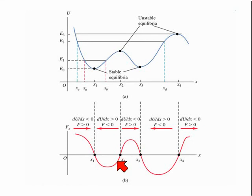To the right of x2, the gradient of the potential energy function is negative, so the force is positive. So again, it is away from x2.